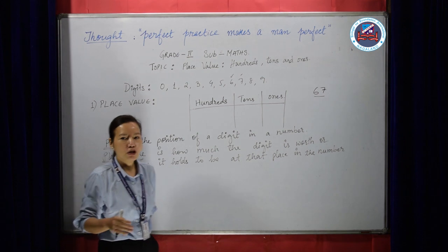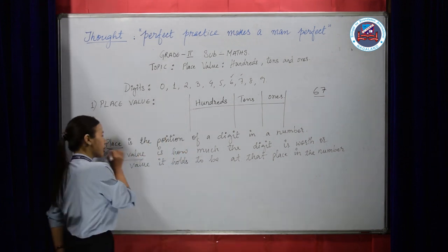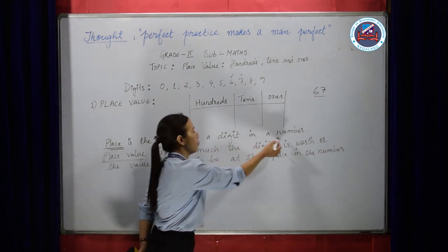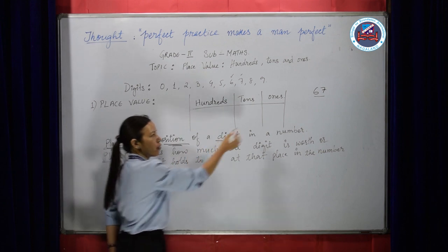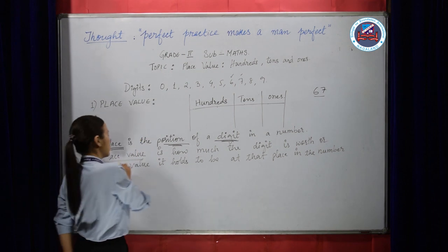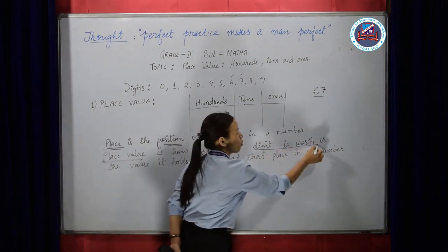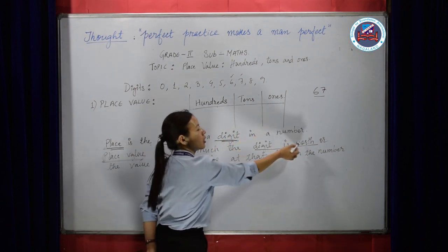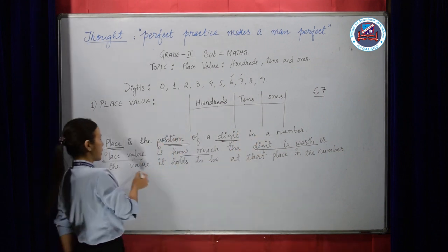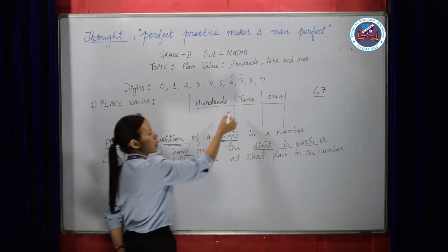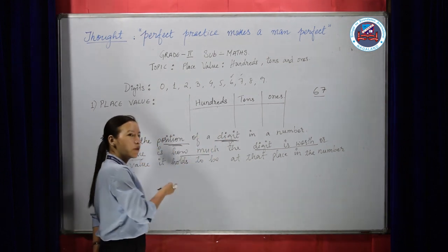So first let's try to understand what we mean by place value, and the difference between place and place value. Place means the position of the digit in a number — that is, is the digit in the position of 1s, 10s, or 100s? And place value means how much the digit is worth. Is it worth 100s, 10s, or 1s? If the digit is in the 10s place, its value will be of 10s. If it's in the hundreds, it will be a value of 100s. That's how we find a place and a place value.